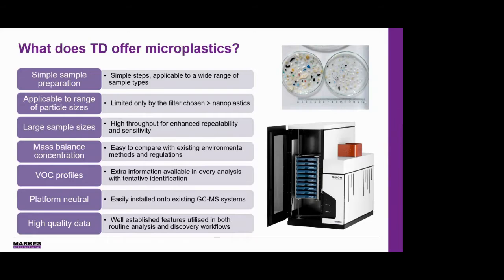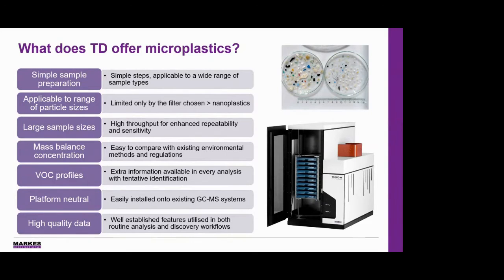So what can this offer the analysis of microplastics? There are a number of features of the TD-GCMS system that provide a wide range of benefits in this application area. The simple sample preparation steps mean the process can be applied to a wide range of sample types, saving users time and money while minimising manual handling. The technique is also applicable to a wide range of particle sizes, limited only by the filter chosen, so analysis of nanoplastics as well as microplastics is possible. Larger sample sizes mean more representative samples, higher sensitivity, and better repeatability — leading to lower cost per sample and high data quality.